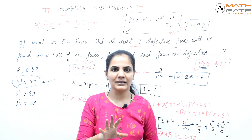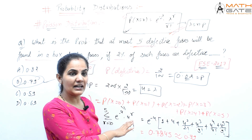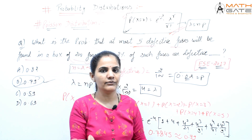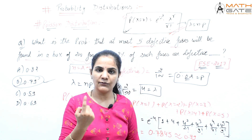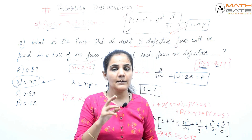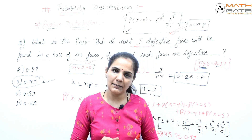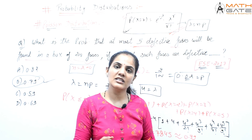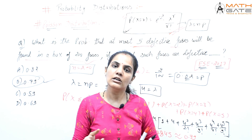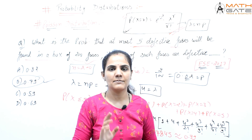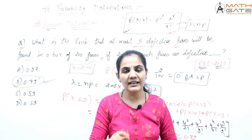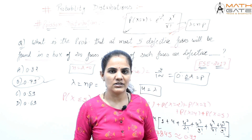In Poisson distribution there are two kinds of questions. One where the probability of success is small and the number of items is large, so you derive lambda from n and p. The second is where you are directly told to use Poisson distribution with the mean given directly. In the next video, we will discuss the uniform distribution.